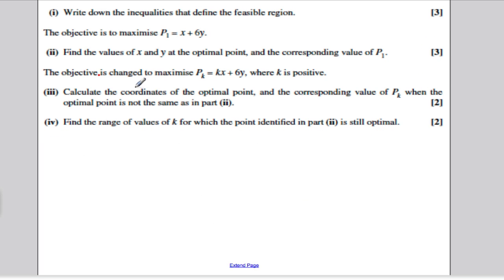Moving on to part 3. It now changes the objective function to be PK is KX plus 6Y, where K is a positive number. It's very similar to P1. Apart from K was chosen to be 1 in the case of P1, K is now a number that you've got to assume isn't 1 and is certainly positive.